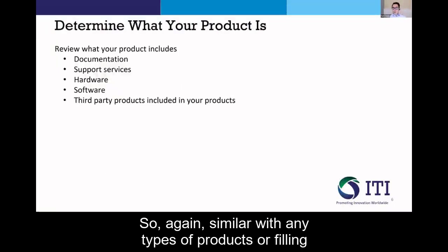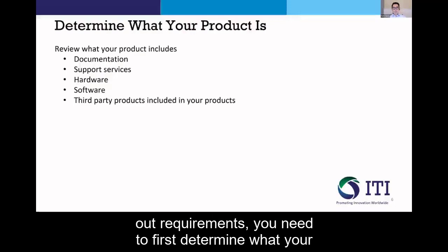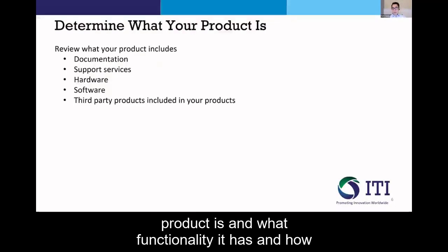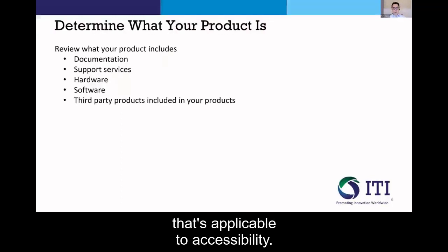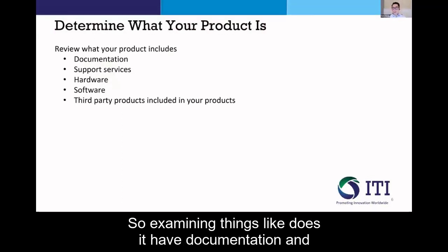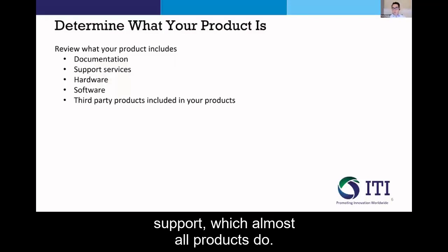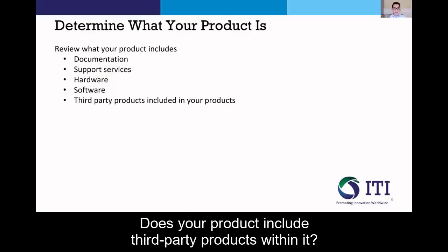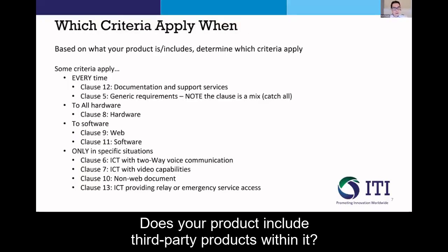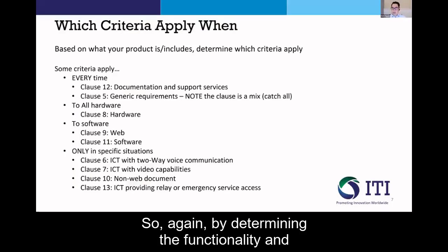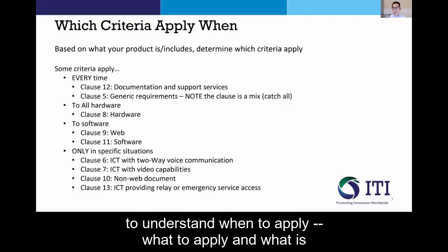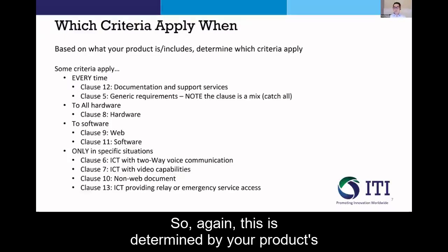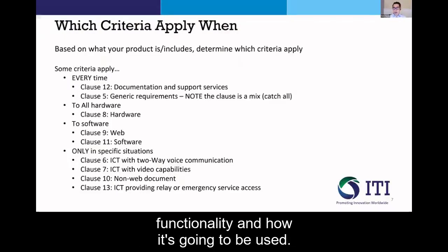Similar to any types of products or filling out requirements, you need to first determine what your product is, what functionality it has, and how that's applicable to accessibility. Examine things like: does it have documentation and support, which almost all products do? Is it hardware, software, or some combination? Does your product include third-party products within it? By determining the functionality and understanding what your product is, that will help you understand when to apply, what to apply, and what is appropriate. This is determined by your product's functionality and how it's going to be used.